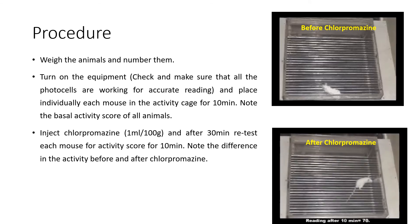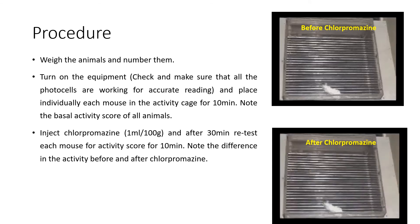Before chlorpromazine, the reading is 140, and after chlorpromazine, the reading is 70. Note the difference in the activity before and after chlorpromazine and calculate the percent decrease in motor activity.